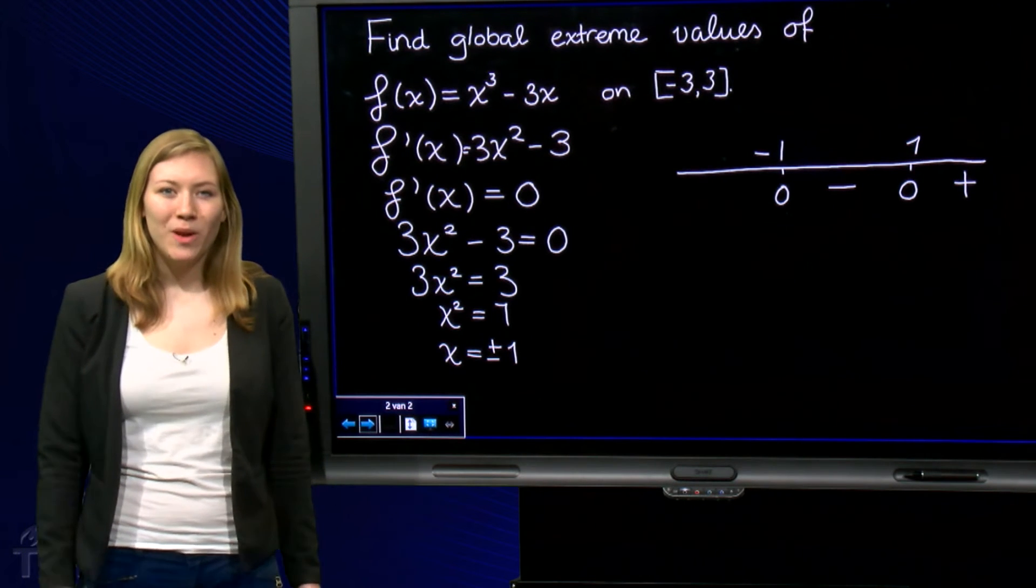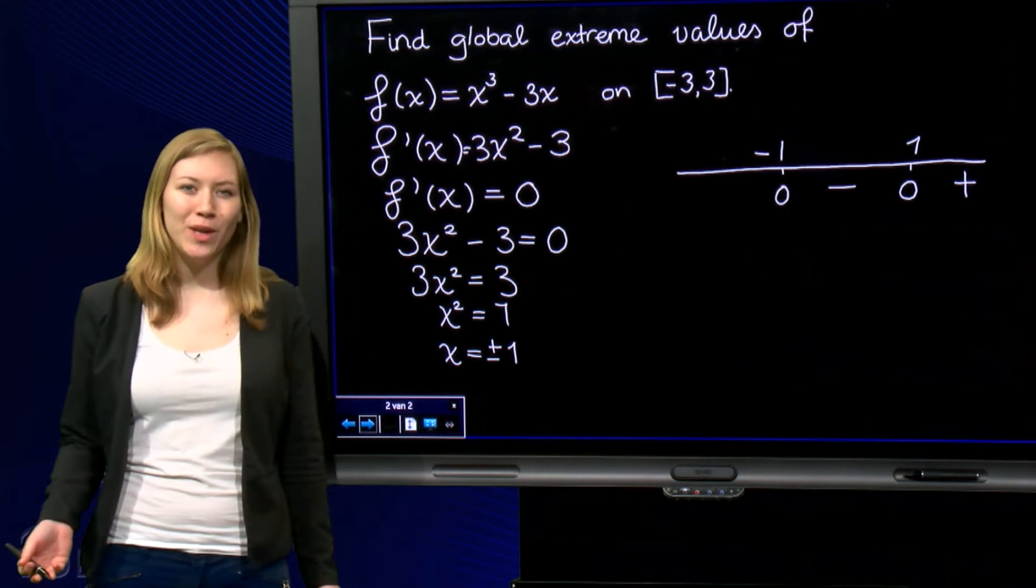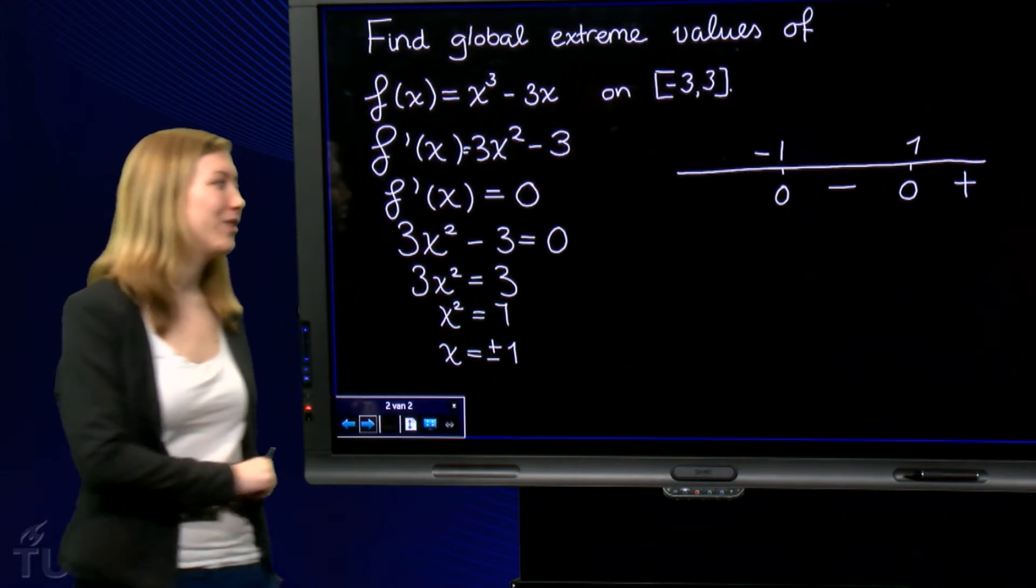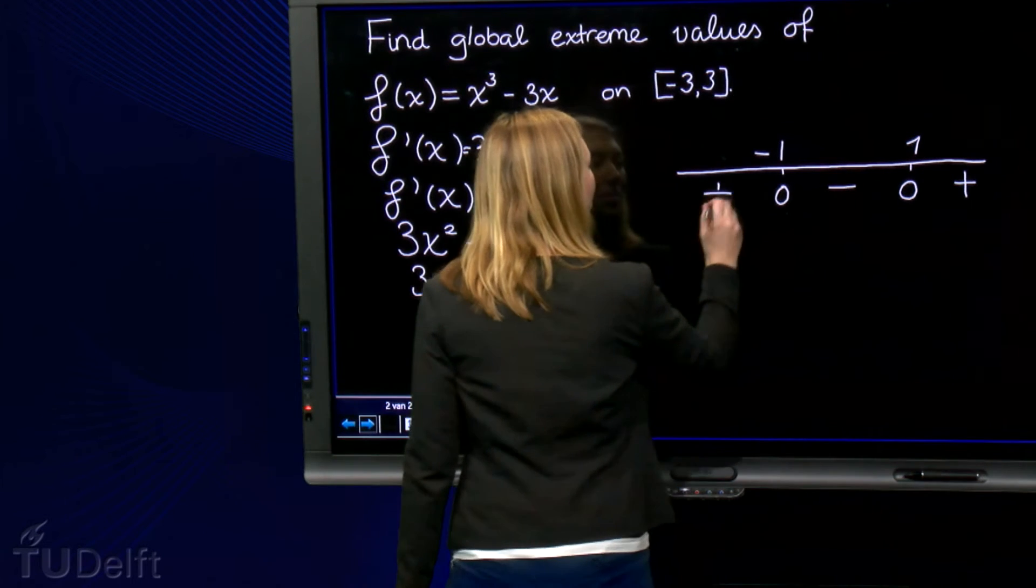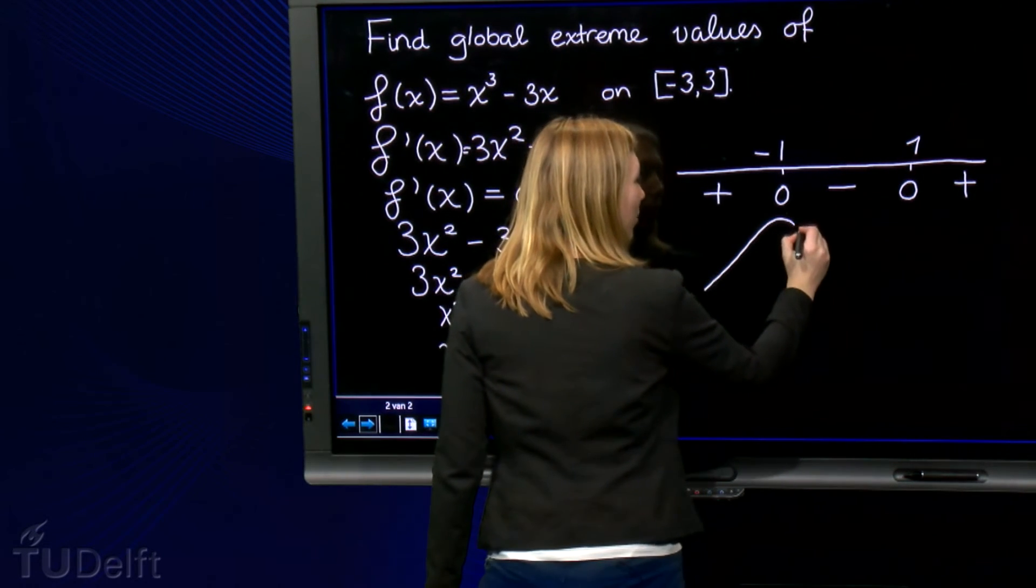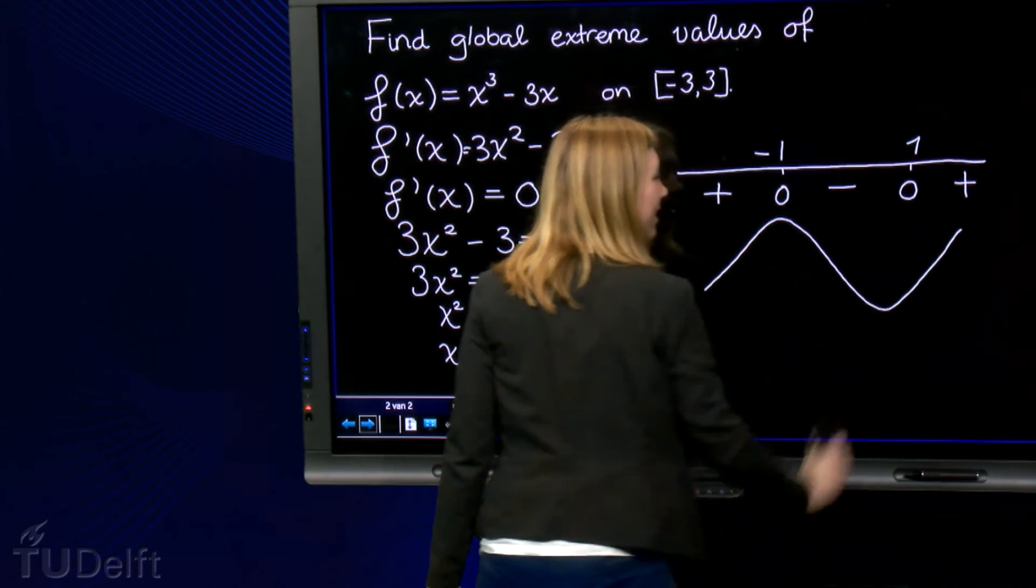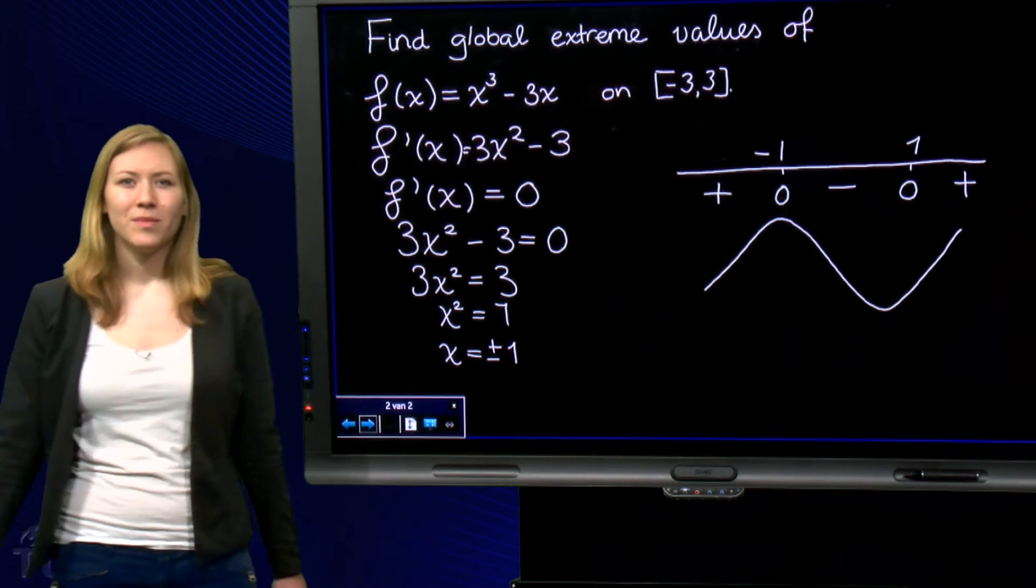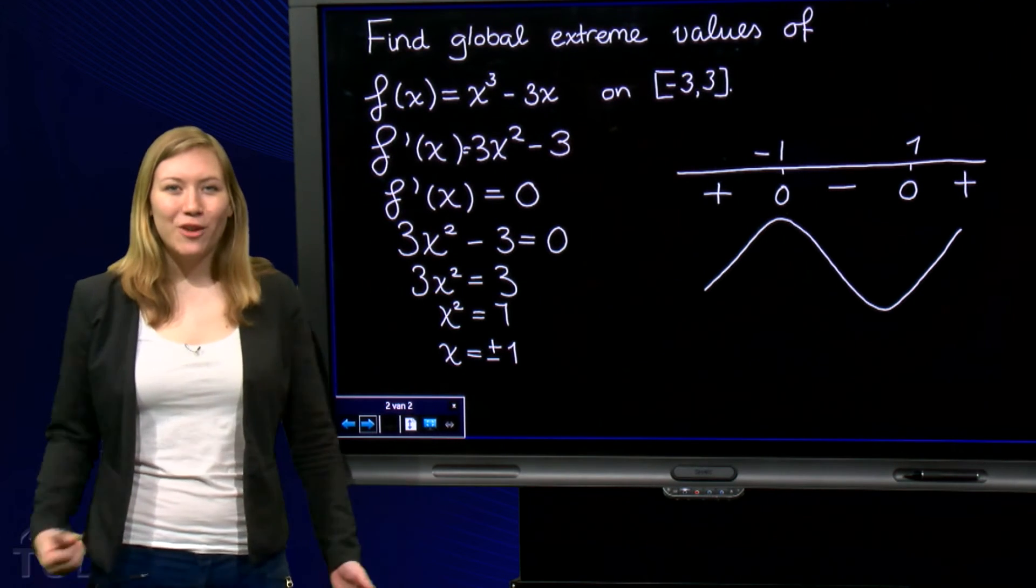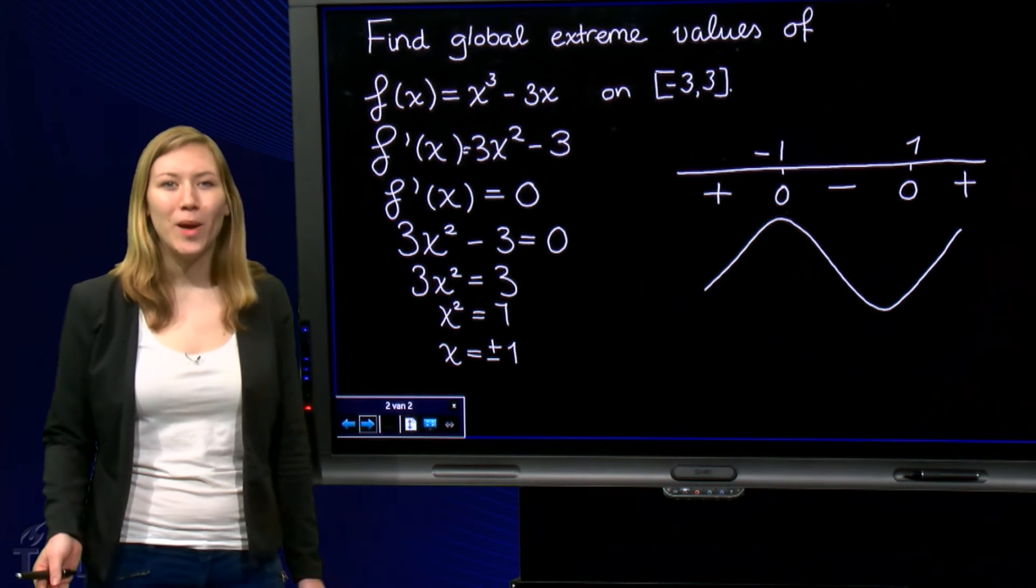At minus 2, we have 3 times minus 2 squared minus 3, which also equals 9, so the function is also increasing at minus 2. This gives us increasing, critical point, decreasing, critical point, increasing. We can now see that our function f has a maximum value at minus 1 and a minimum value at plus 1.